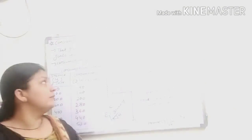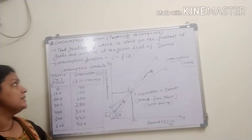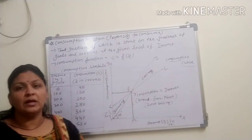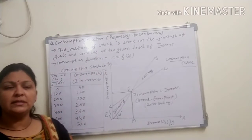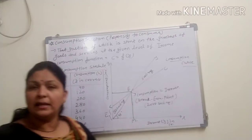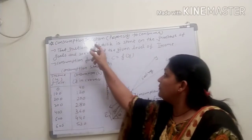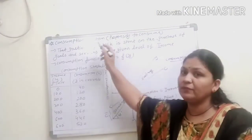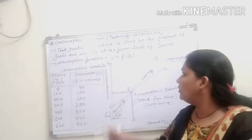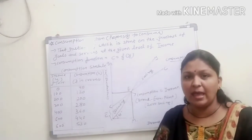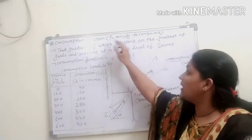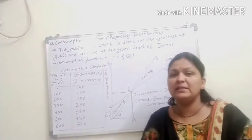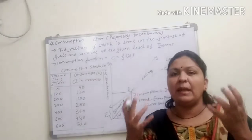Good morning students. Today we will start our next topic, that is the consumption function, also called propensity to consume. This is part of the aggregate demand and aggregate supply. Consumption is denoted by C, and consumption function — as you know in maths, functions are denoted by F. Another name of the consumption function is the propensity to consume, which means your consumption capacity.